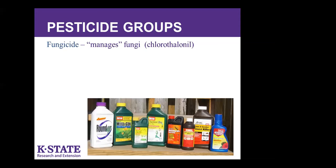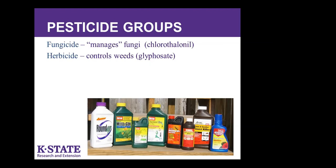Pesticide groups: we categorize them overall as pesticides, but individual groups include fungicides — products that manage fungi, with chlorothalonil as an example active ingredient. Herbicides control weeds; glyphosate, commonly found in Roundup, is an example. Insecticides control insects; malathion is an example of an older one. Miticides really don't exist anymore for homeowners — about all we can use are horticultural oils and sometimes soaps. These illustrate the different pesticide groups available.